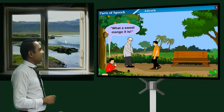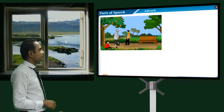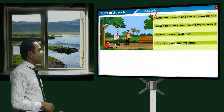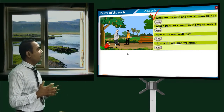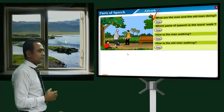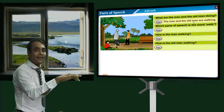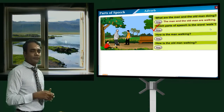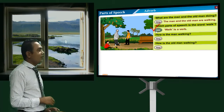What a sweet mango! The boy is eating a sweet mango. What are the man and the old man doing? The man and the old man are walking. 'Walk' — which part of speech is 'walk'? Of course, it's an action word, so it's a verb.